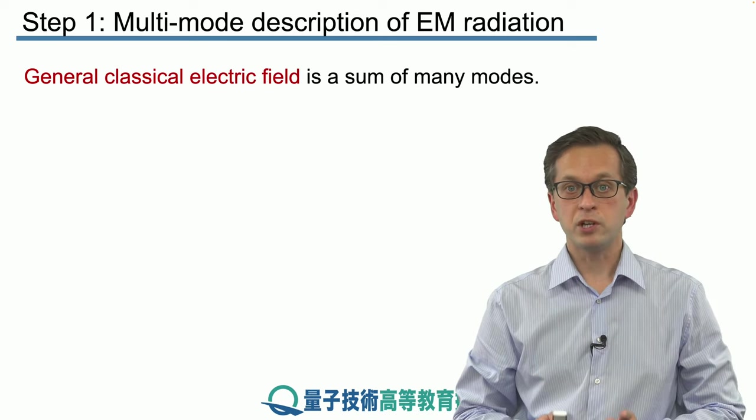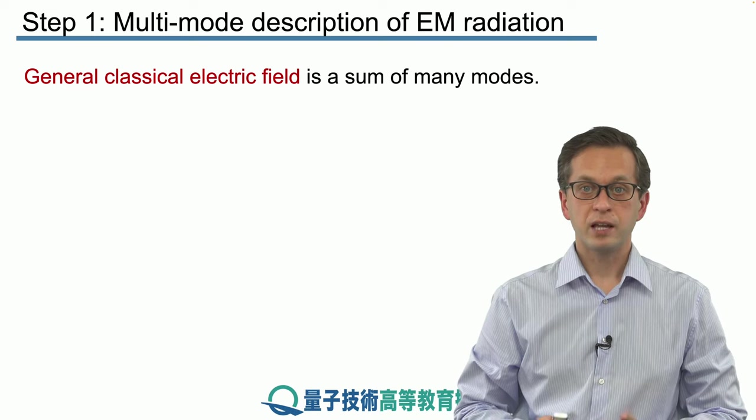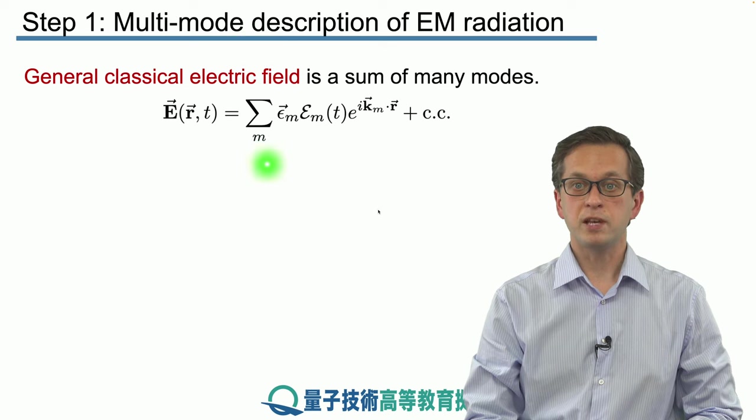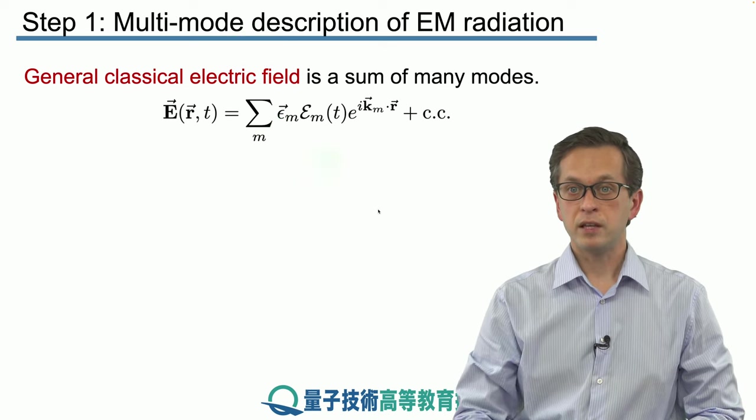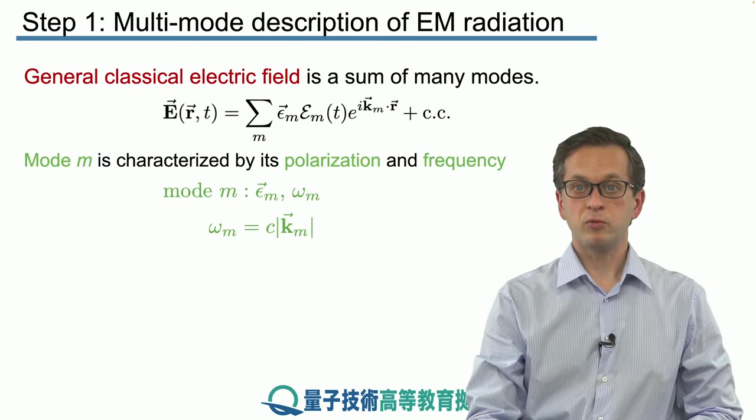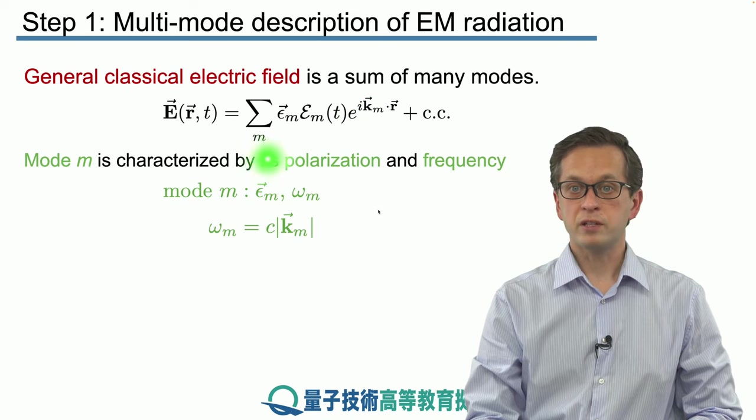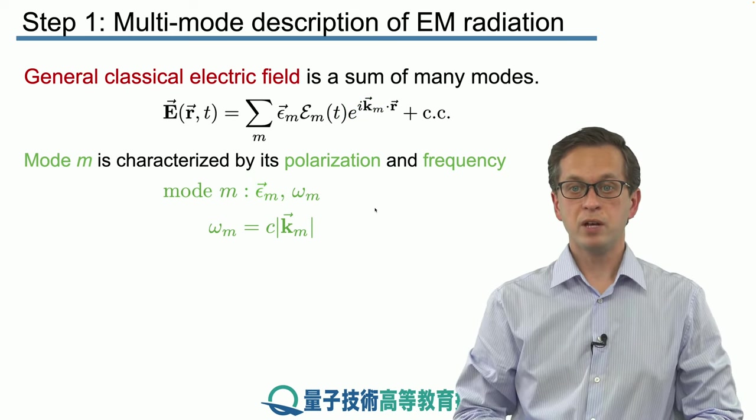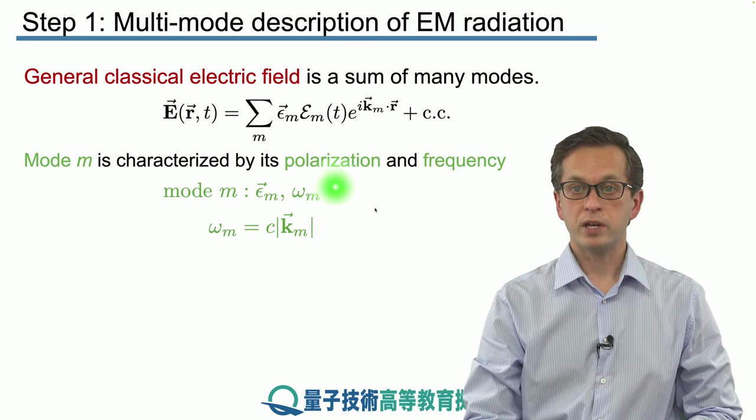We know that a general classical electric field can be written as a superposition over all the different electric modes for each individual mode m. This is the usual expression that we are used to and every mode is characterized by its polarization given by epsilon m and its frequency omega m.